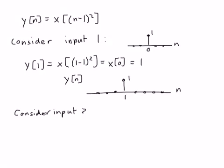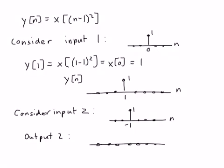Now consider input 2: just shift input 1 by one sample, so the impulse is at n = -1. Since we never look at negative-index values of x due to the square, we're never going to see that in the output. So the output for input 2 is all zeros — a shifted input did not result in a shifted output.